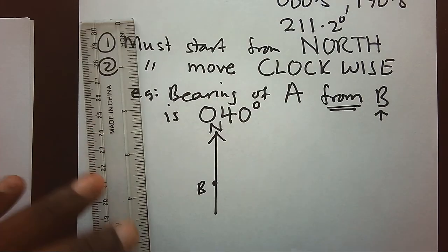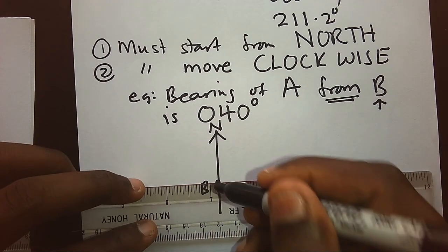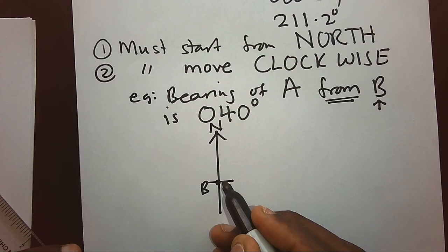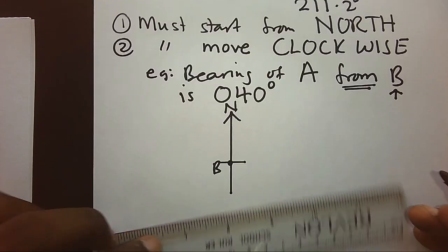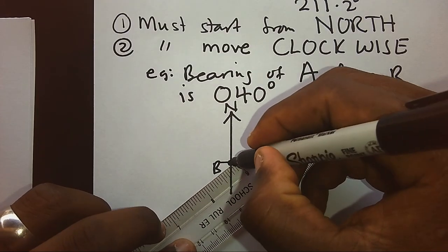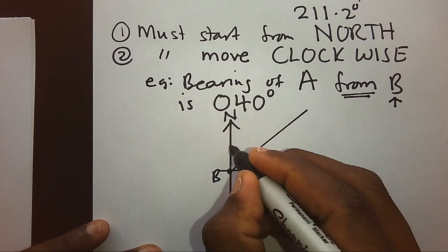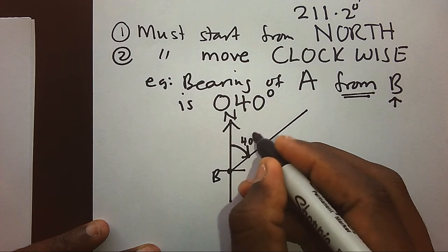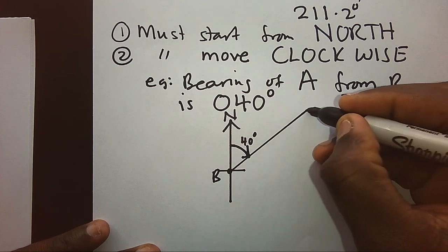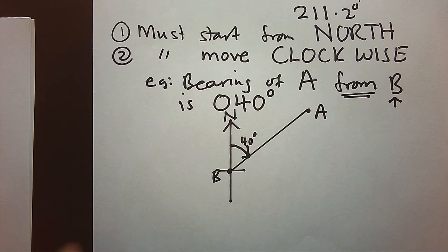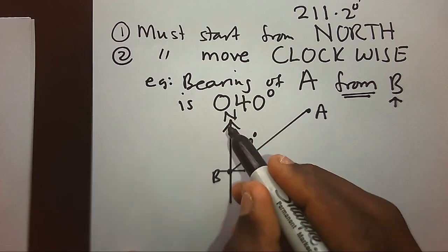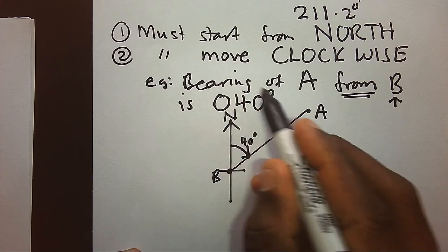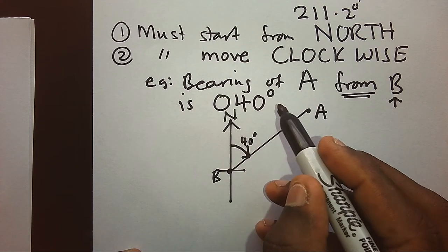Remember, if I put the small line, this angle here is 90. My estimation of 40 will end up around somewhere there. So we'll say the bearing is moving clockwise 40 degrees in order to see the position of A. So clearly once you start from north and you move clockwise to represent that given angle, then you will be able to understand direction using bearing.